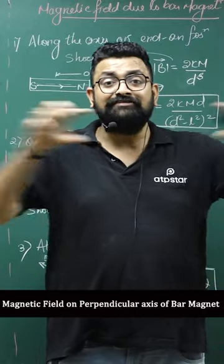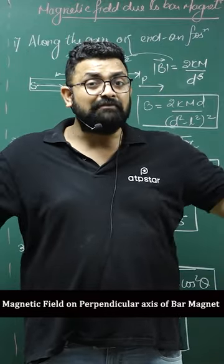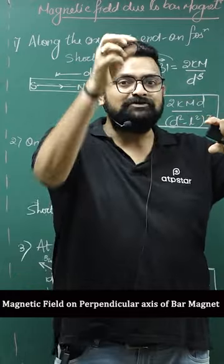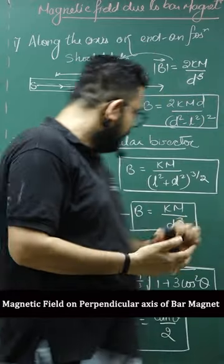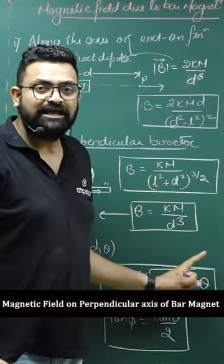Let's try to know what the value of magnetic field is in a bar magnet in broadside position or perpendicular axis. So its value is Km upon D cube.